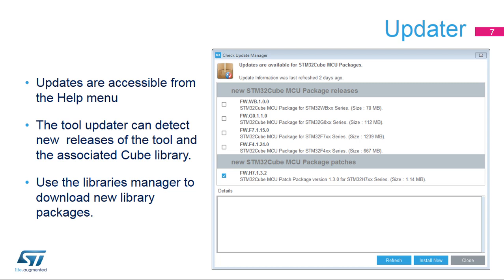Use the Install New Libraries option (ALT+U) to download additional STM32Cube libraries or retrieve older versions for interoperability reasons. However, note that the STM32CubeMX tool is not tested with all historical library releases, and new library releases may not work correctly with old tool versions.